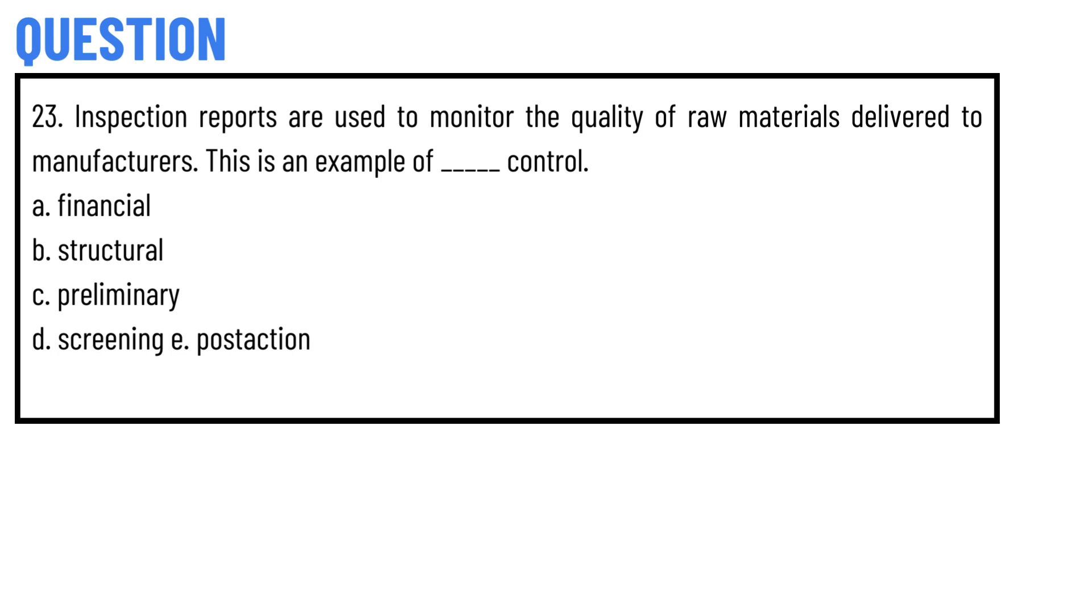Our today's question is: Inspection reports are used to monitor the quality of raw materials delivered to manufacturers. This is an example of _____ control. Option A: financial, Option B: structural, Option C: preliminary, Option D: screening.